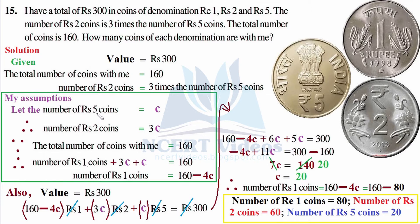My assumption is: let the number of rupee 5 coins equal c, where c is the variable denoting coins. We choose c as the base variable because rupee 2 coins depend on rupee 5 coins. Therefore, the number of rupee 2 coins equals 3c — three times the number of rupee 5 coins. We need not write the multiplication sign between the coefficient and variable; it is understood.